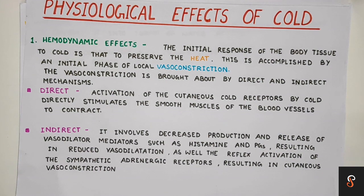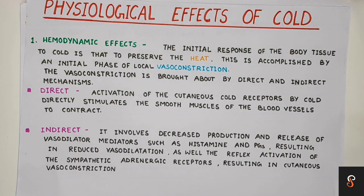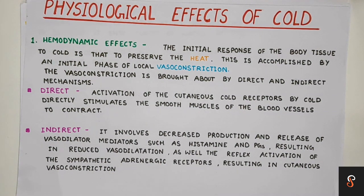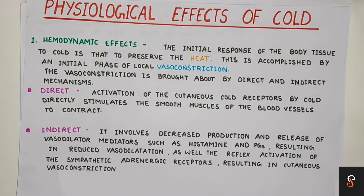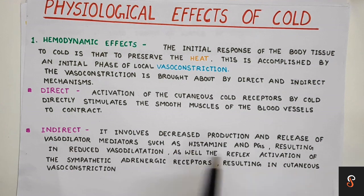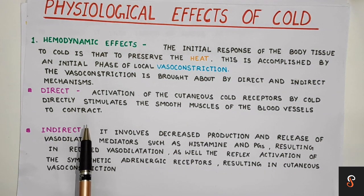Vasoconstriction occurs in two ways in our body: first by a direct mechanism and second by an indirect mechanism. In the direct mechanism, when cold is applied, there is activation of cutaneous cold receptors, which directly stimulate smooth muscles, and as a result the blood vessels contract, resulting in vasoconstriction.